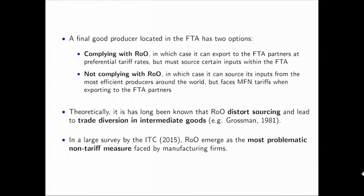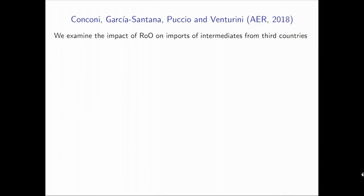What is also known from firm-level surveys is that firms say rules of origin are the biggest non-tariff barriers they face, at least firms in manufacturing. So theoretically it has been known for a long time, policy makers and firms say this is a big concern, but empirically we knew very little of the extent to which rules of origin give rise to trade diversion. The main goal of this paper — joint work with Manuel Garcia Santana at UPF in Barcelona, Laura Puccio the lawyer on the team who was a student of Petros Mavroidis, and Roberto Venturini who used to be one of my graduate students at Brussels — was to systematically examine the impact of rules of origin in free trade agreements on trading in intermediates.